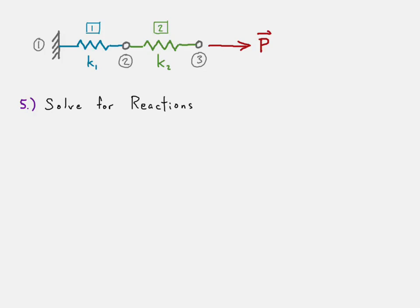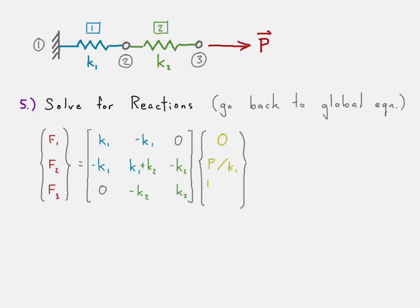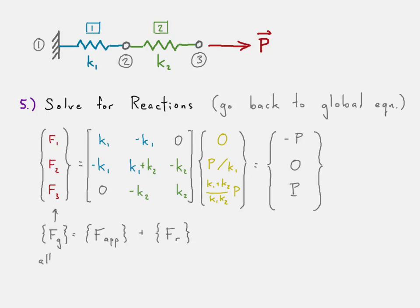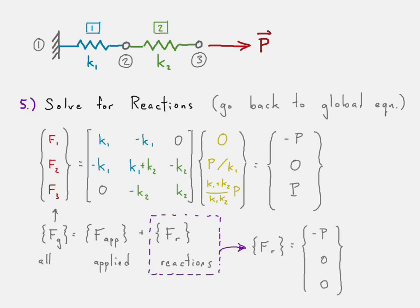Once our displacements are known, we can use those displacements to solve for our reactions. We go back to the global stiffness matrix equation. We know that the displacement at node one is zero, and we plug in the values we found for the displacements at nodes two and three. We recognize that what we solve for is our global force vector — all the forces, which includes applied loads and reactions. To solve for reactions, we take the global force vector and subtract our applied loads, which is just P applied at node three.